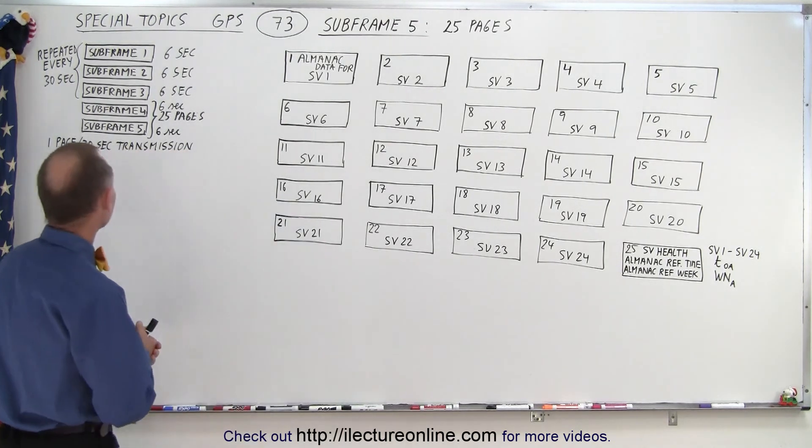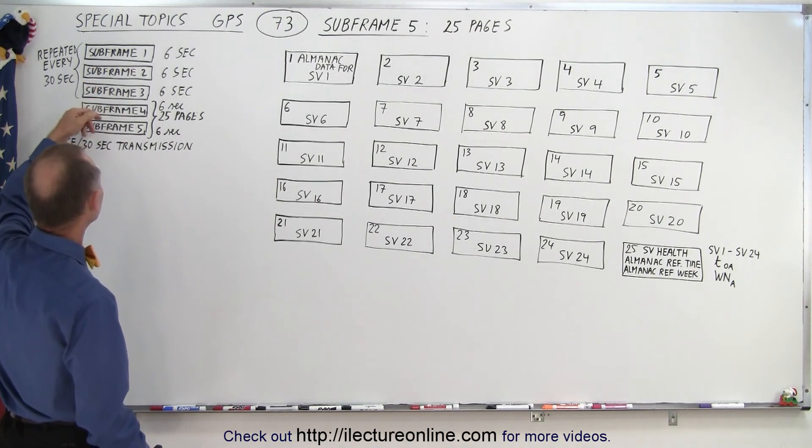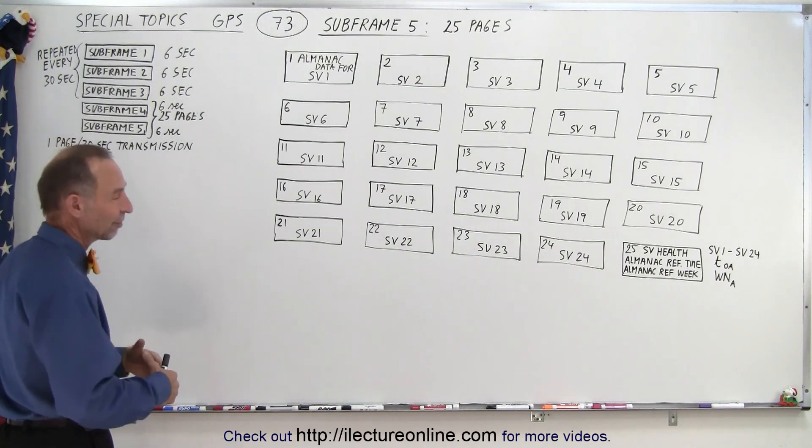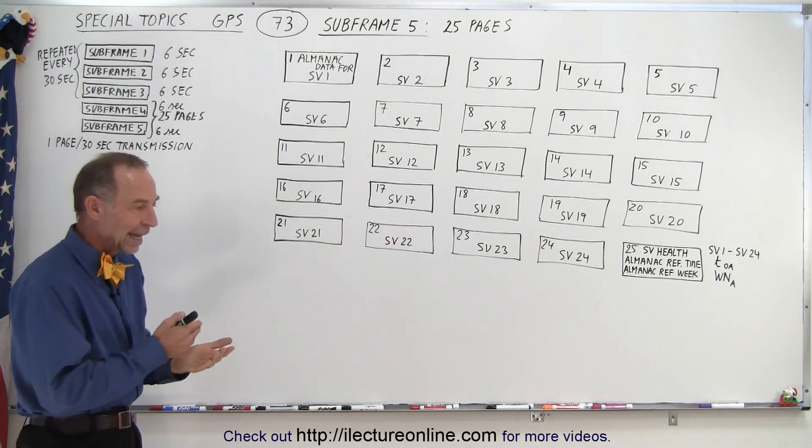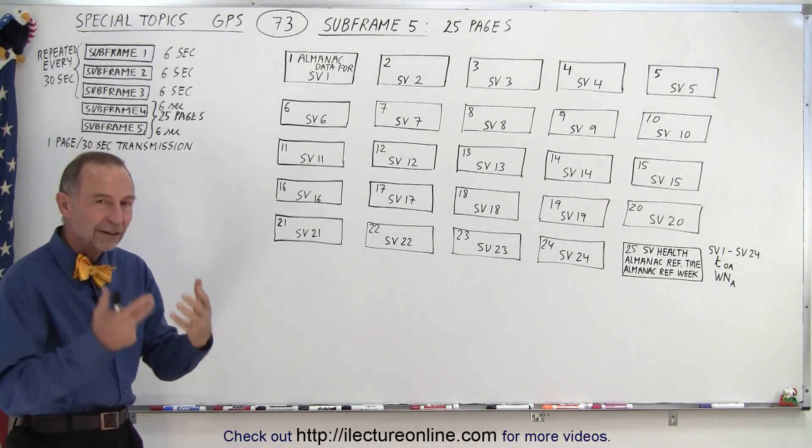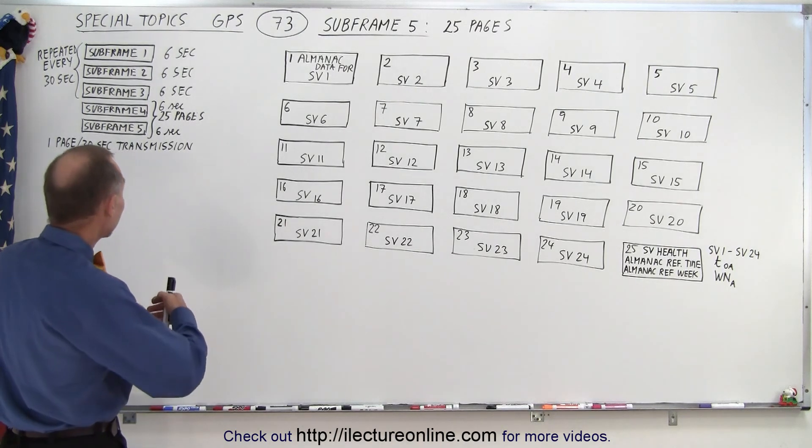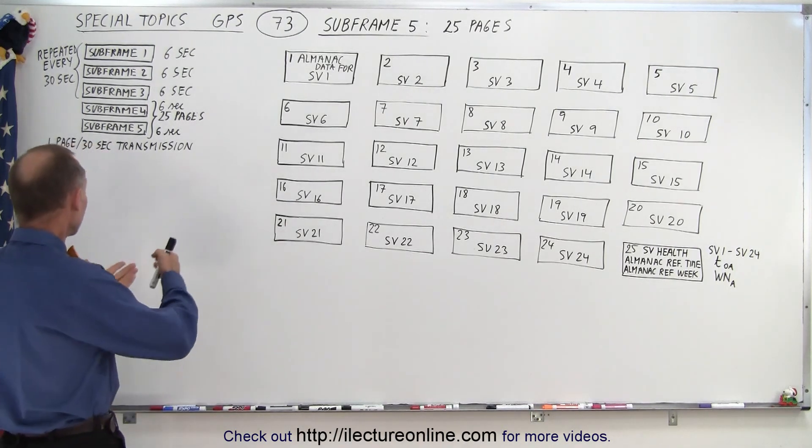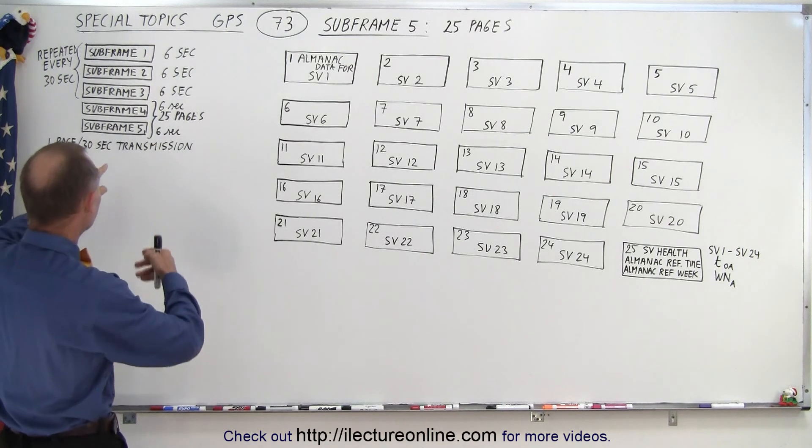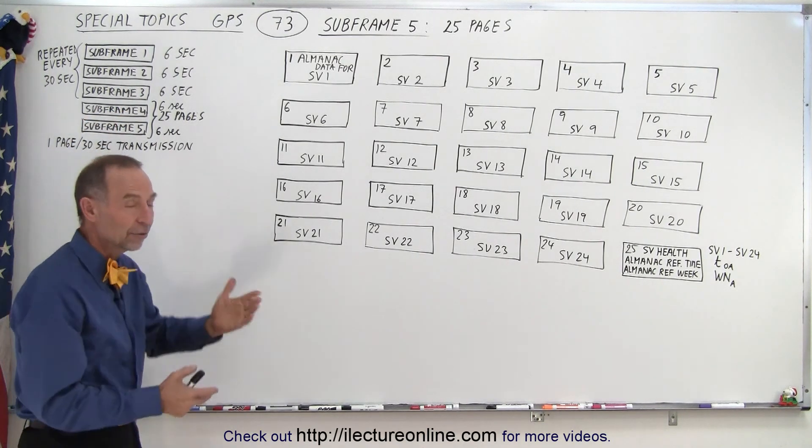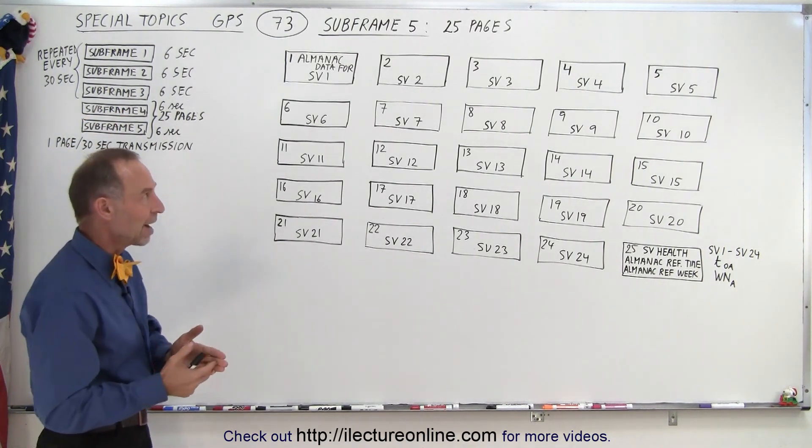Remember that the first three subframes contain data that gets repeated every 30 seconds, while subframe four and five consists of 25 pages. Each of those pages will have different kind of data in it. So it takes 25 transmissions of 30 seconds per five subframes to get all the pages transmitted of subframe four and subframe five.